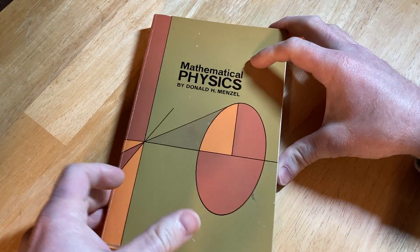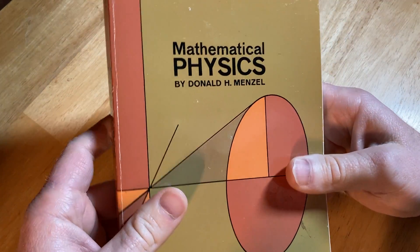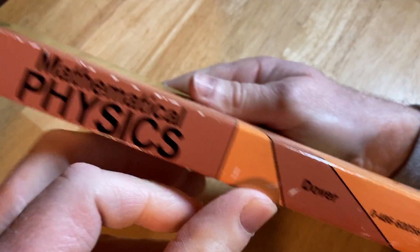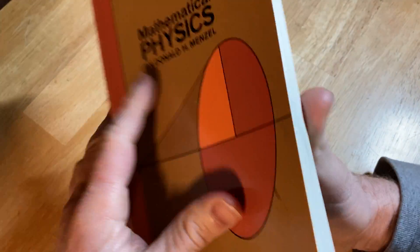Hi. This is a book on mathematical physics by Donald H. Menzel. This is a Dover book, which means it's a reprint of an old classic.